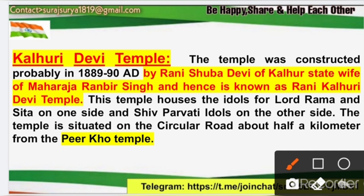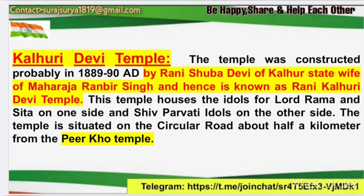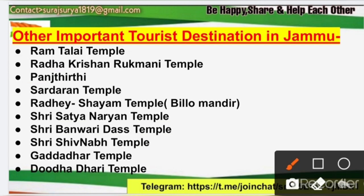Kalhouri Devi Temple is also located in Jammu district. It was built between 1889 and 1890 (approximately). It was built by Rani Shobha Devi of Kalhour State, who was the wife of Maharaja Ranbir Singh — hence it is named Rani Kalhouri Devi Temple. Inside, there is an idol of Lord Rama and Sita, and on one side, idols (pandias) of Mata Parvati and Shiva are also placed. It is located on Circular Road, Jammu — approximately half a kilometer from Peer Kho Temple.